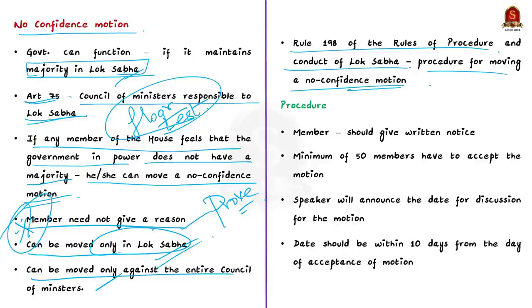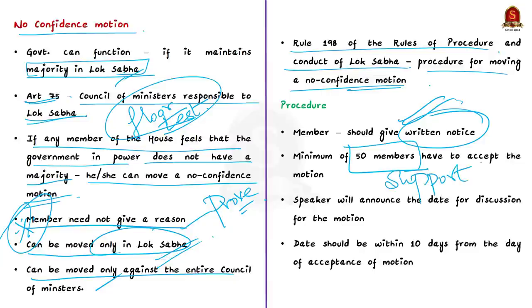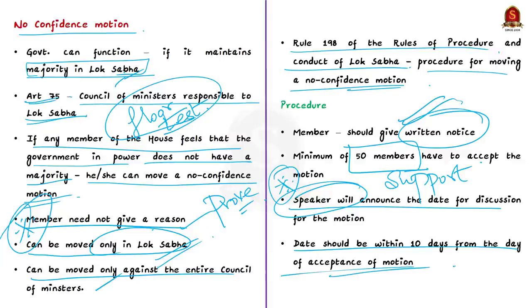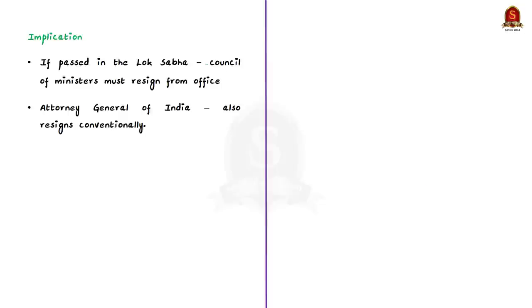The member has to give a written notice of the motion, which will be read out by the Speaker. A minimum of 50 members must accept the motion, and accordingly the Speaker announces the date for discussion, which must be within 10 days from the day the motion is accepted. Otherwise the motion fails and the member who moved it is informed. If the motion is passed in the Lok Sabha, the council of ministers must resign from office.